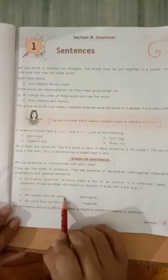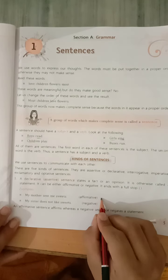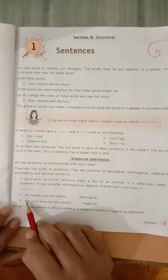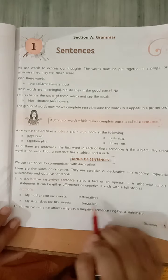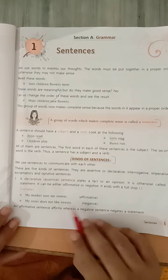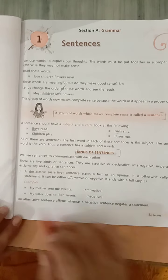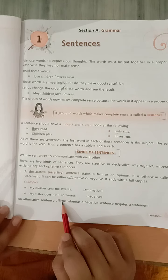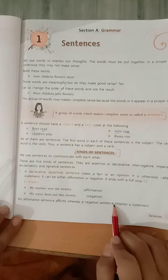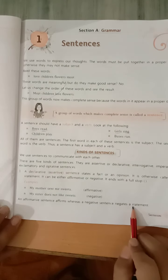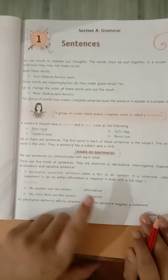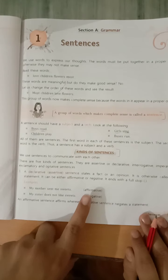For example, my mother sent me sweets. Ye kaun sa hai? Affirmative. Full stop pe end hua hai. My sister does not like sweets. Ye negative ho gaya. An affirmative sentence affirms, whereas a negative sentence negates a sentence. Negativity bhi ho sakta hai. Aur ismein affirmative mein, a phrase ke bare mein bhi ho sakta hai. Okay?